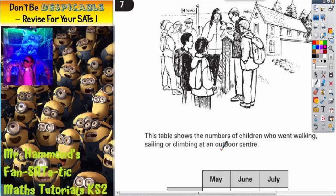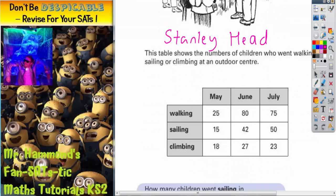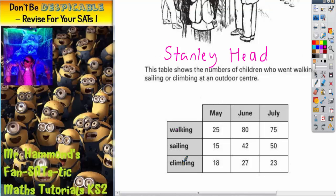Question 7. This table shows the numbers of children who went walking, sailing, or climbing at an outdoor center. At the end of year 6, some of you may end up going to an outdoor center nearby called Stanley Head. Some of the activities you can do at Stanley Head include walking, sailing, and climbing.